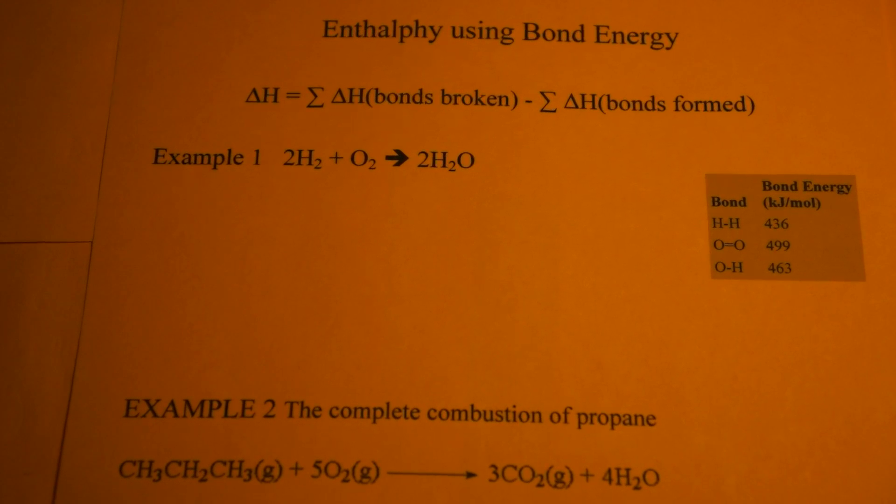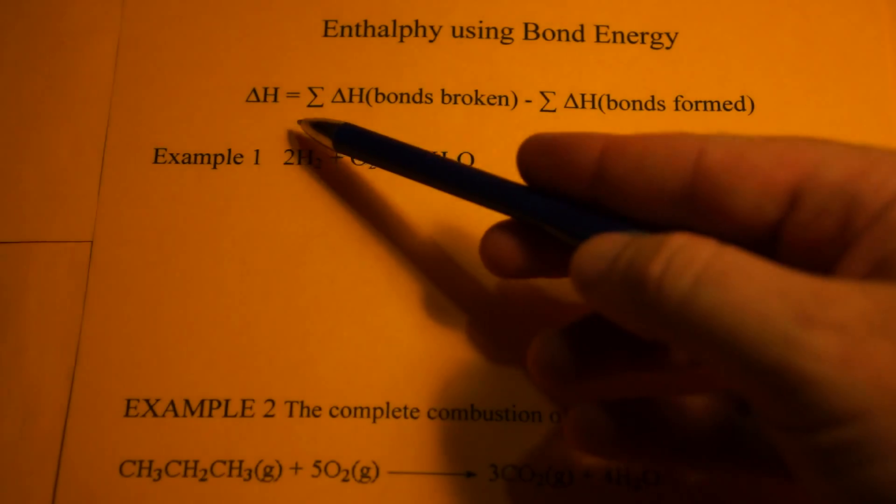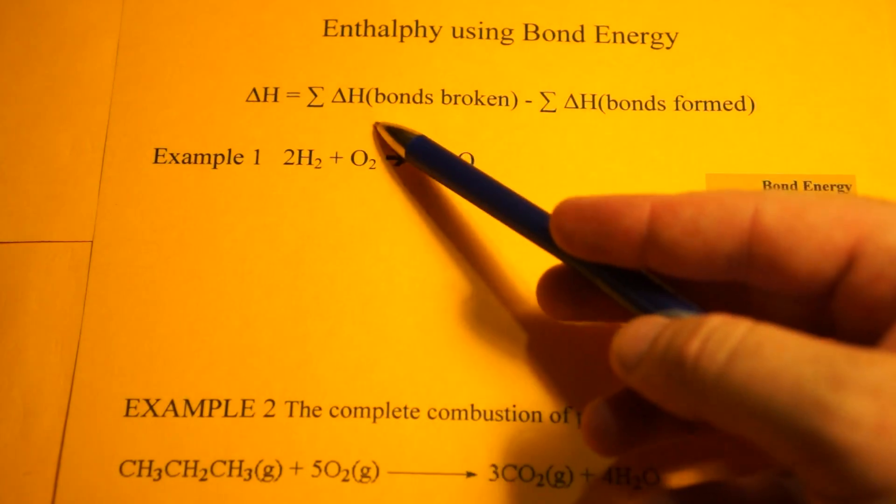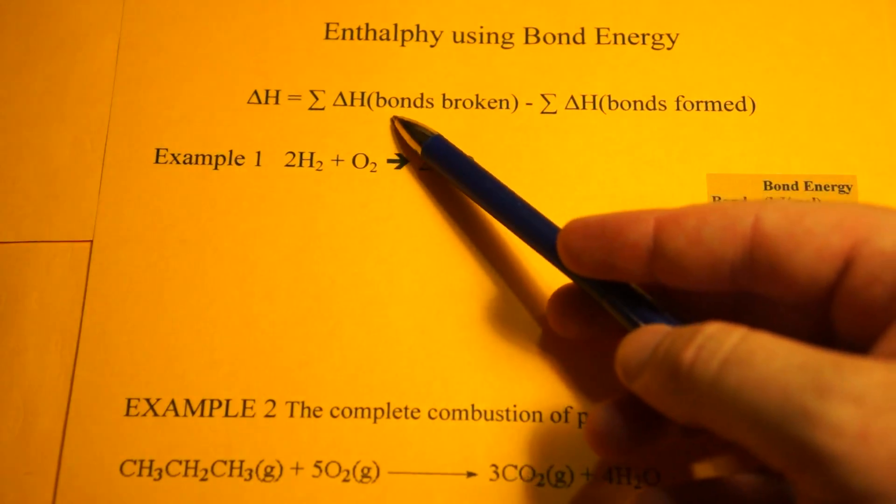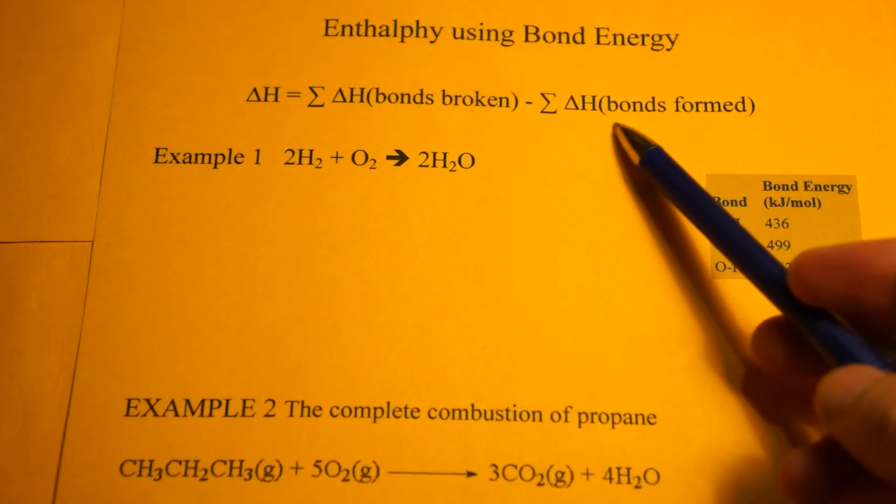This video is going to show you how to calculate enthalpy using bond energy. Enthalpy, or delta H, is equal to the sum of the heat or the energy to break your bonds minus the sum of your bonds formed.